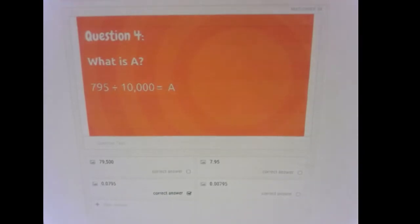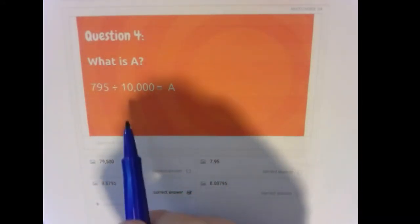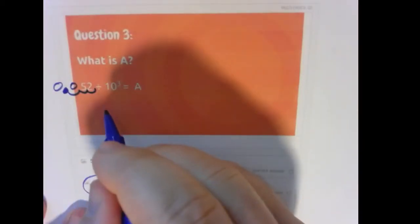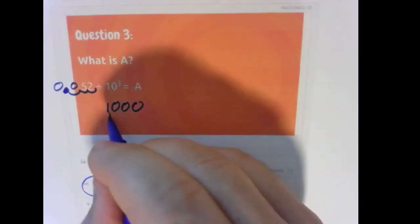This question asks it slightly differently again. So if we're given 795 divided by 10,000, so 10,000, right? If we go back a second, 10 to the third power would be like 10 times 10 times 10, or 1,000.